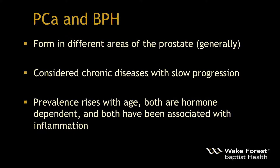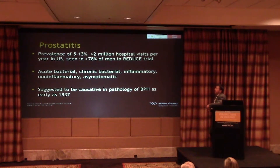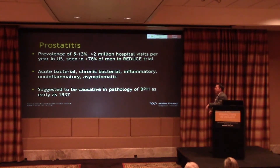Prostate cancer and BPH generally form in different areas of the prostate. Both are considered chronic diseases with slow progression, and the prevalence rises with age. Both are hormone dependent, and both have been associated with inflammation. Prostatitis, with a prevalence of 5 to 13 percent in the United States and over two million hospital visits per year, was seen in over three-quarters of men in the REDUCE trial. It was suggested as causative for BPH as early as the 1930s.